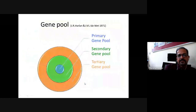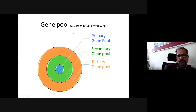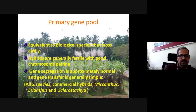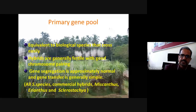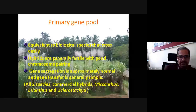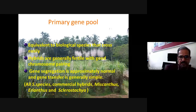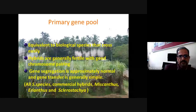Harlan and de Wet in 1971 classified gene pools of cultivated crops into primary, secondary, and tertiary gene pools. For sugarcane, the primary gene pool consists of biological species that cross very easily, with generally fertile hybrids, normal gene segregation, and simple gene transfer. All species within Saccharum, and all genera of the Saccharum complex that are freely hybridizable, are classified under the primary gene pool of sugarcane.